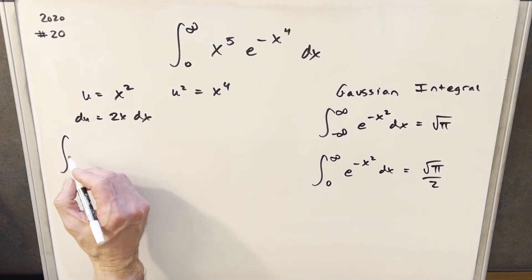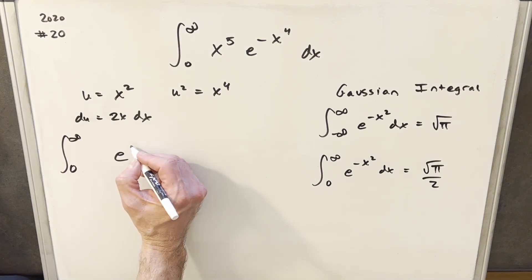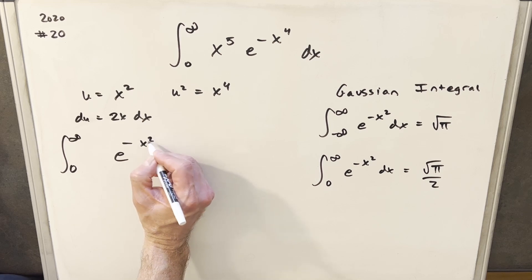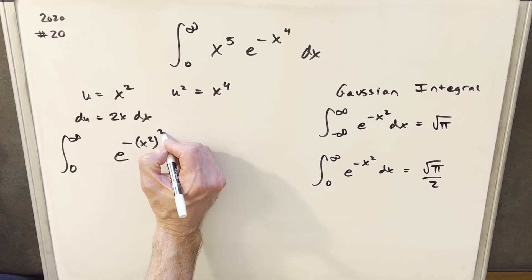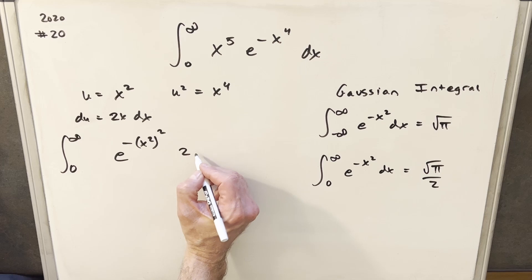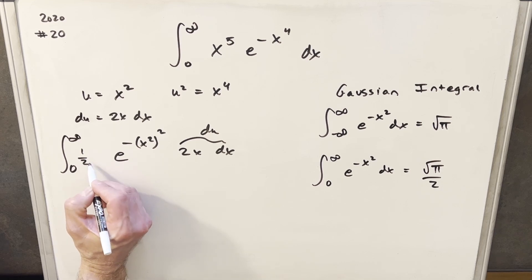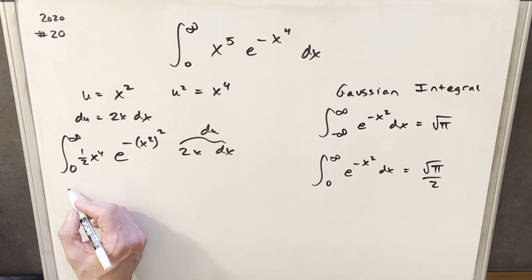Before I actually do the substitution I'm just gonna set this up so it's gonna make it real easy for myself. So we'll write, we'll just notice here again on this exponent x to the fourth is x squared squared. I'm gonna create this 2x dx over here because that's my du. And so that we don't change it this over here is gonna be just one half x to the fourth. Noticing when we multiply a half x to the fourth times 2x we get back our x to the fifth. And now I can make my substitution.